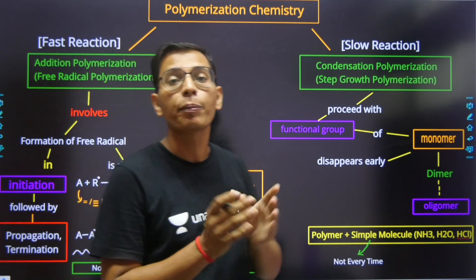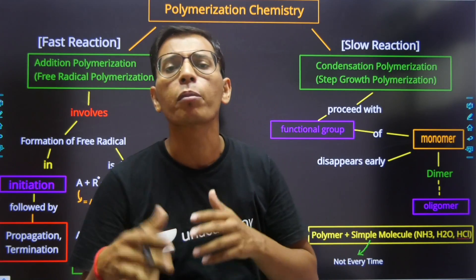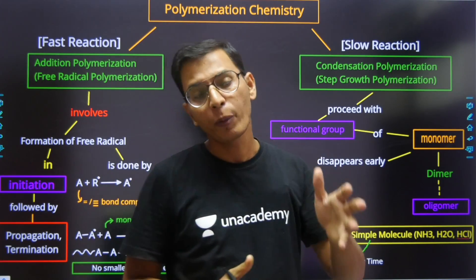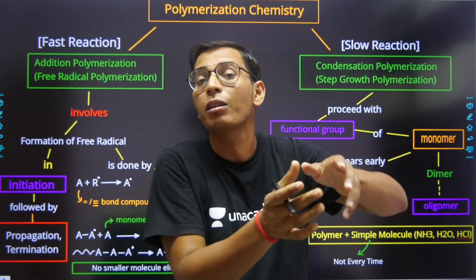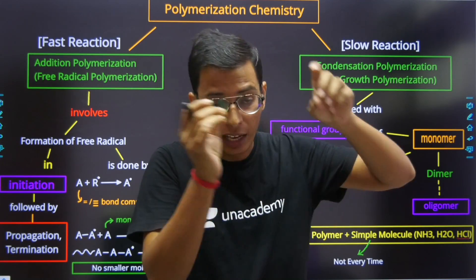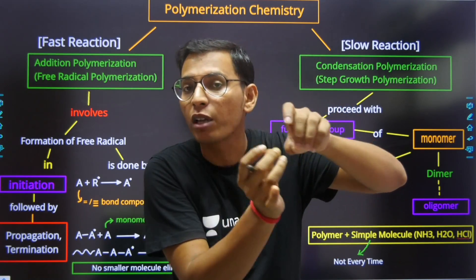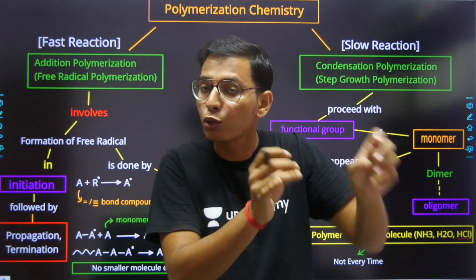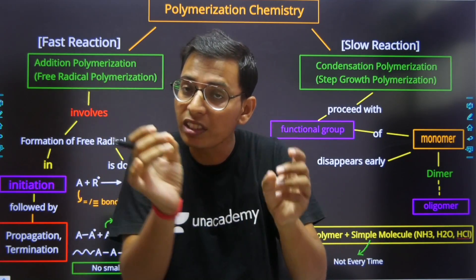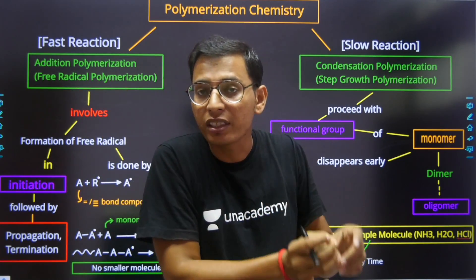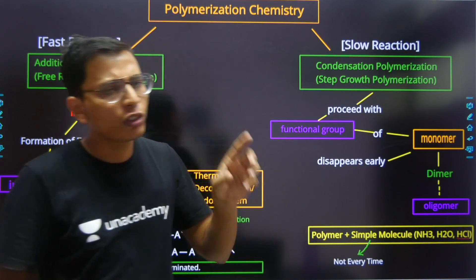That topic is polymerization chemistry. If there is any polymer formation, there is a mechanism — a chemical reaction — which follows a polymer through polymer formation. This is basically the chemistry and the mechanism of polymerization.